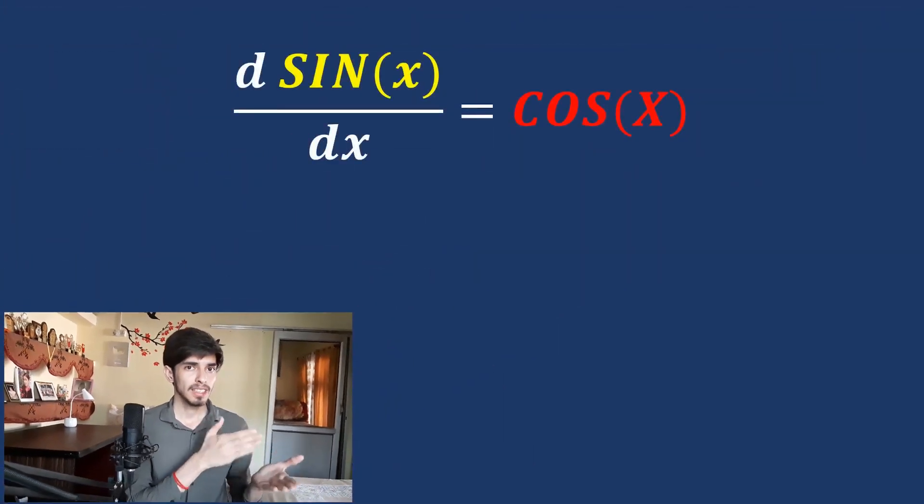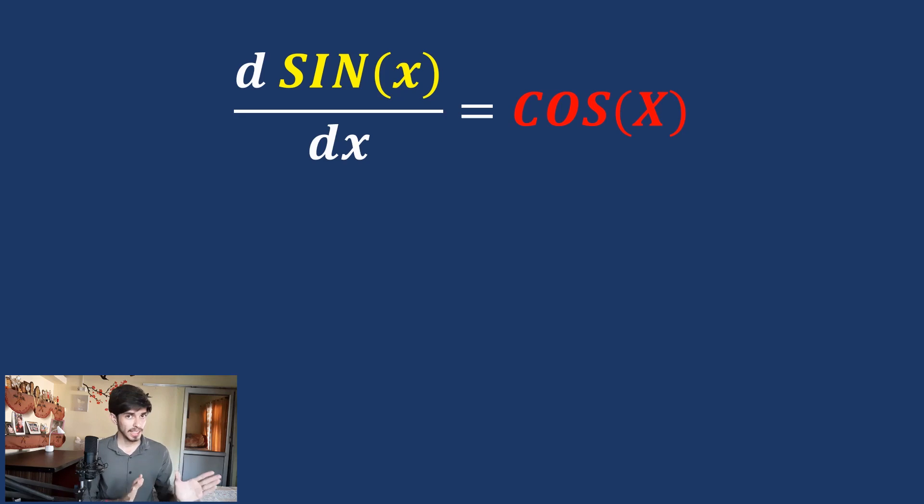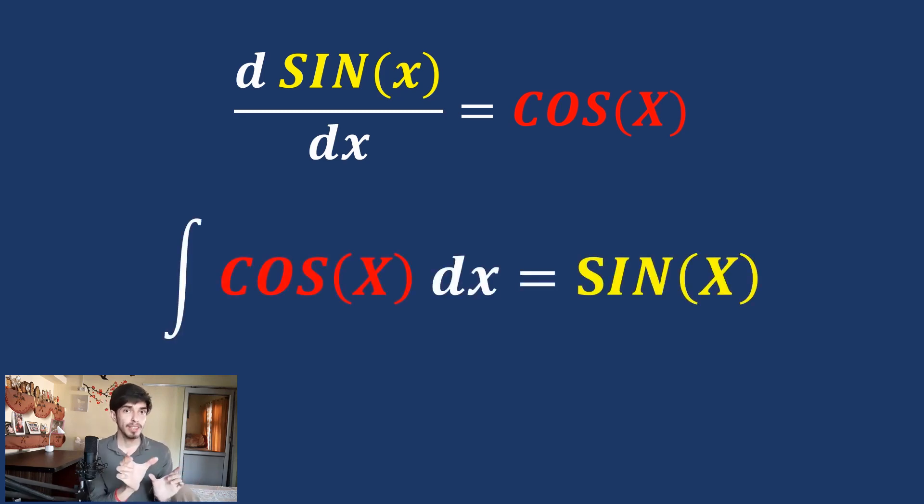Let us leave that question aside for a moment and understand what we mean by the indefinite integration of a function — taking integration as just a name for now, and connecting it to the area under the curve later. It is a really simple concept. Differentiation of sin x is cos x, so the integration of cos x will be sin x. Integration of a function is a function whose derivative is that function itself. It is just the opposite of differentiation, which is why it is also called the anti-derivative. Integration is like joining things and differentiation is separating things.